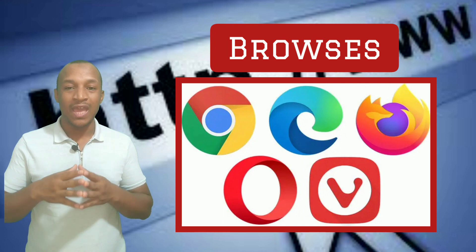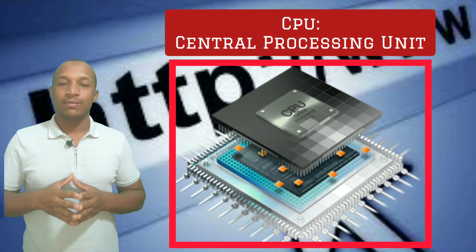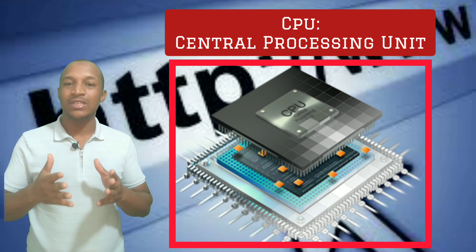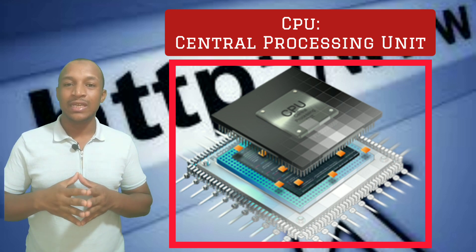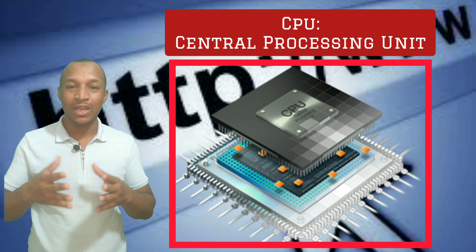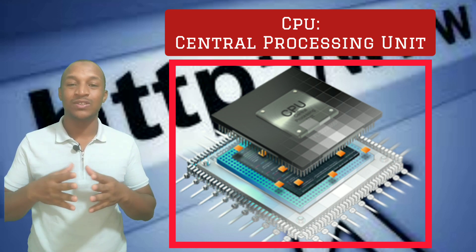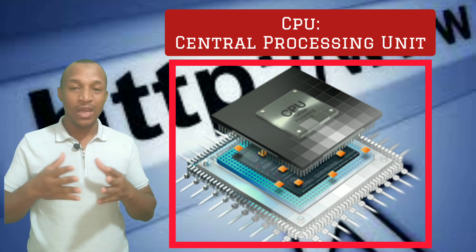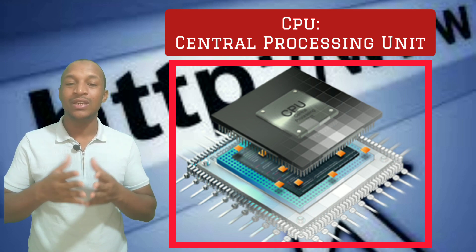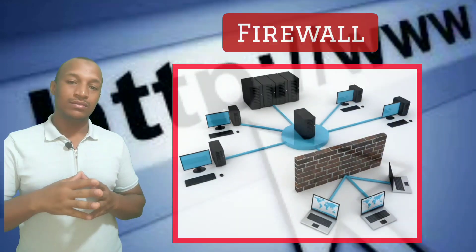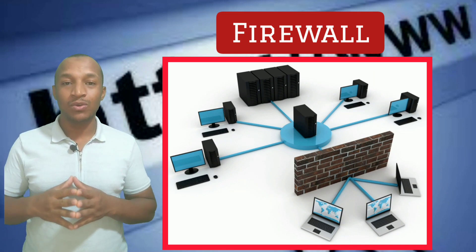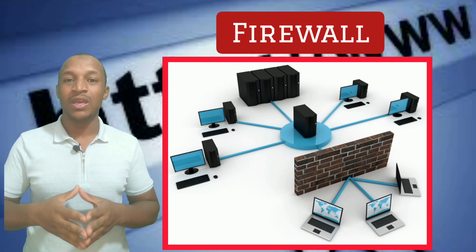CPU, or Central Processing Unit, is the brain of your computer. It handles all calculations and processes. The higher the CPU speed, the faster your computer can execute tasks.